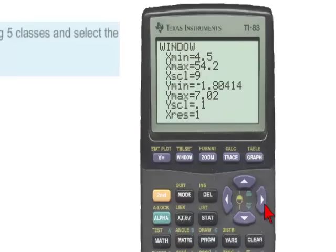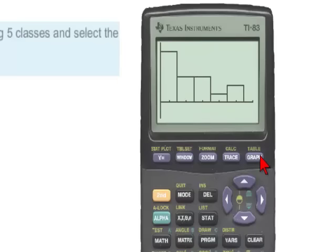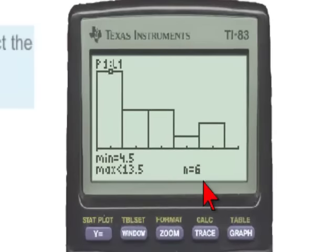To graph the histogram, we'll hit the graph key. And here we see a histogram with five classes. To find the frequency of the first class, we'll simply hit the trace key. And we see that the frequency of the first class is 6.